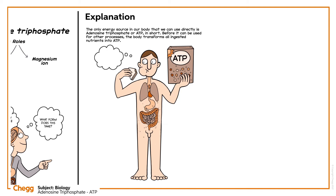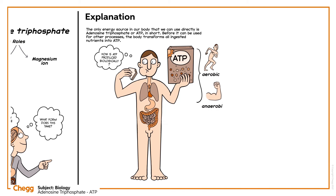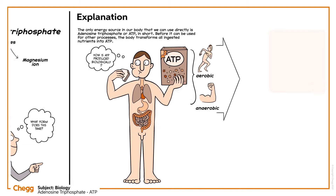You might be wondering how ATP is produced biologically. The body can manufacture ATP through a variety of methods. Both aerobic and anaerobic circumstances can result in the creation of ATP. We will discuss the two primary processes, cellular respiration and anaerobic respiration, which generate ATP.